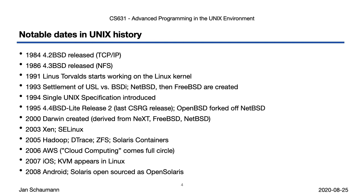Now Bell Labs had licensed the OS and source code to Berkeley, but BSDI was selling a product derived from this code and was subsequently sued by Unix Systems Laboratories, USL, a subsidiary of AT&T Bell Labs at that time. BSDI claimed that they could not possibly be at fault because they got their code from UC Berkeley. And so USL said, cool beans, we'll sue UC Berkeley as well.